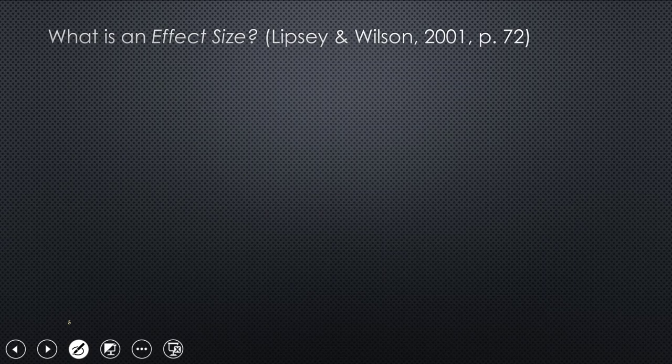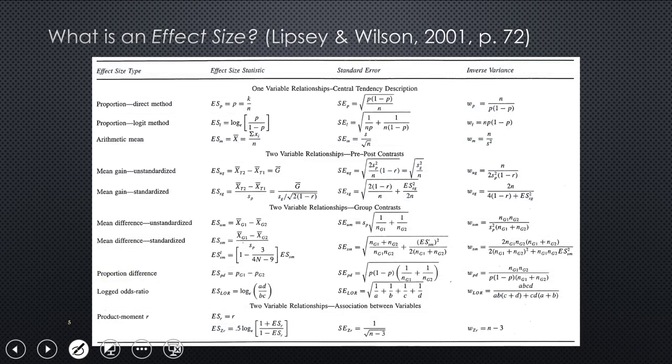Lipsey and Wilson provided a very helpful table of effect sizes. Look at this. There's like 10 of them in this table, 11 something. The ones that get the most attention are the mean scores here. Mean gain scores. Mean difference scores. And then, of course, the odds ratio is pretty big. And the product moment are, Pearson's correlation.